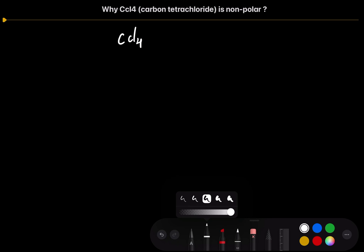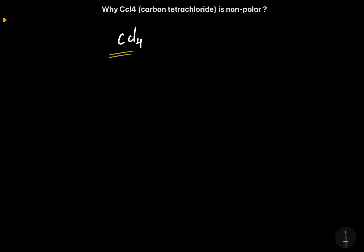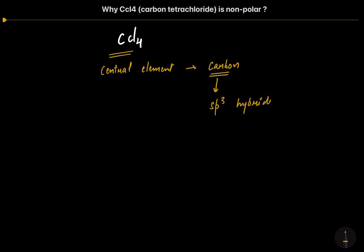Here, the central element in case of carbon tetrachloride comes out to be carbon. In carbon tetrachloride, carbon is sp3 hybridized. And we all know that the standard structure for sp3 hybridization is tetrahedral. So let's make the tetrahedral structure of CCl4.